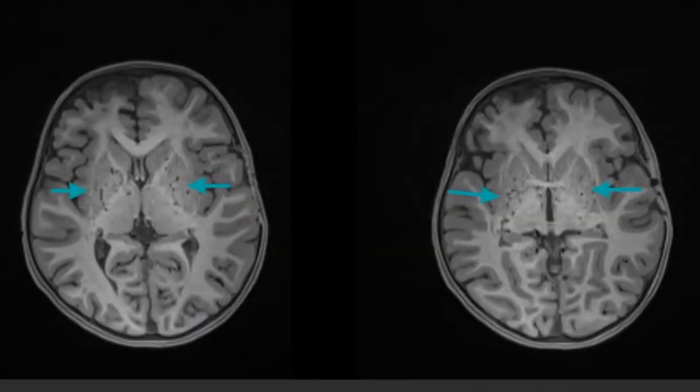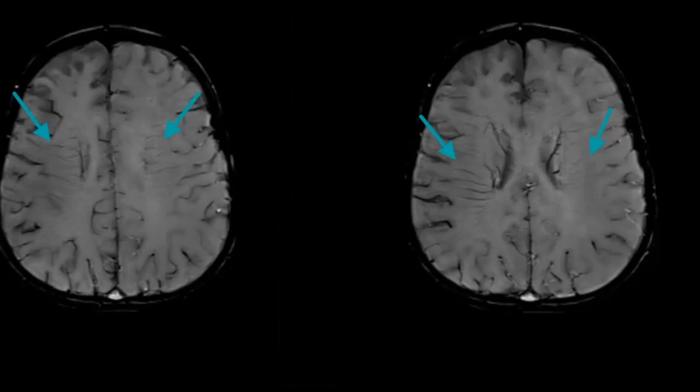Axial T1 images show multiple tiny hyperintense foci in bilateral gangliothalamic regions. Axial SWI images show multiple horizontal hypointensities representing prominent deep medullary veins.